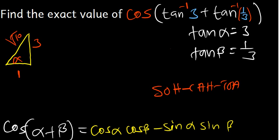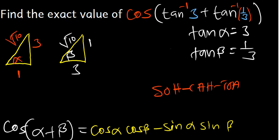Now we draw a triangle for angle β. For β, tanβ = 1/3, so the opposite side is 1 and the adjacent is 3. Using Pythagoras again, the hypotenuse is also √10.